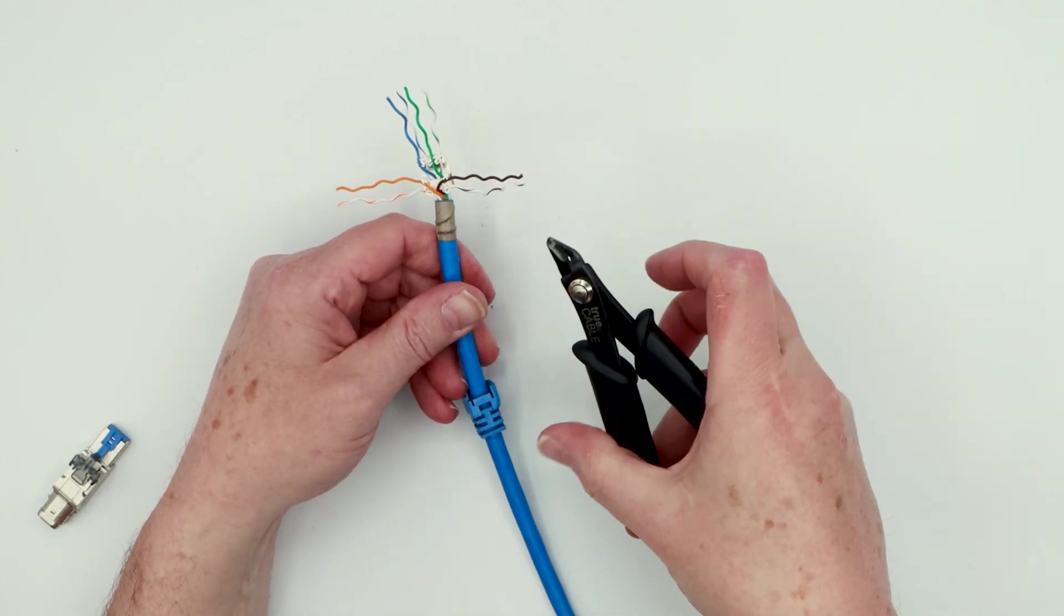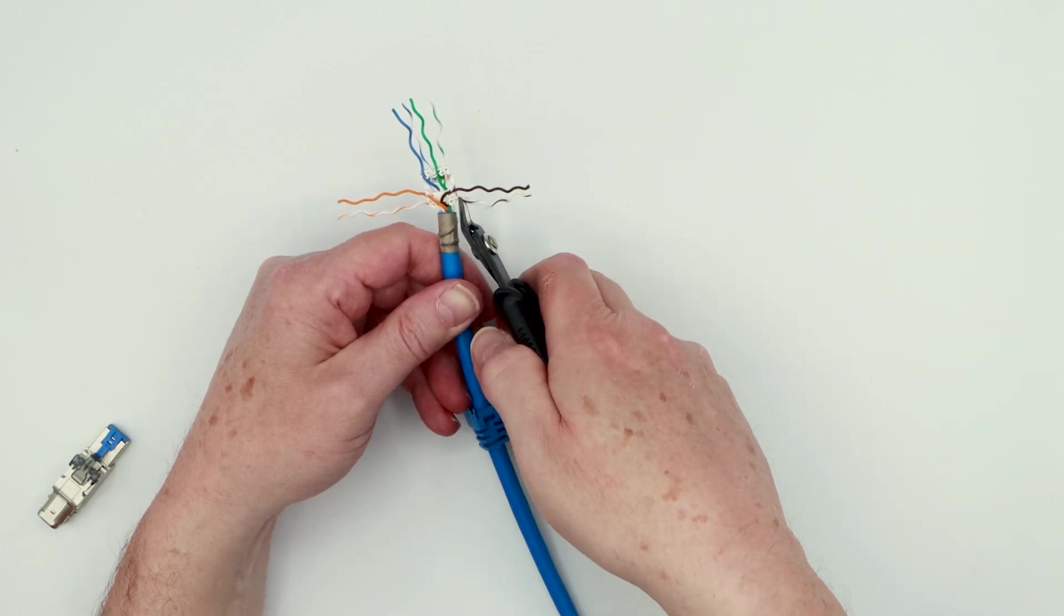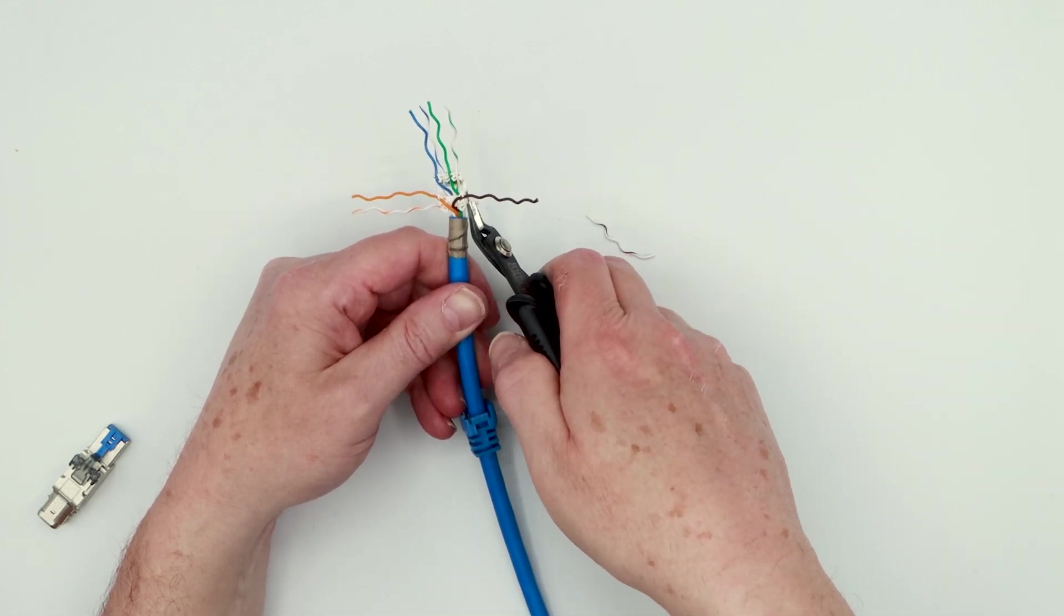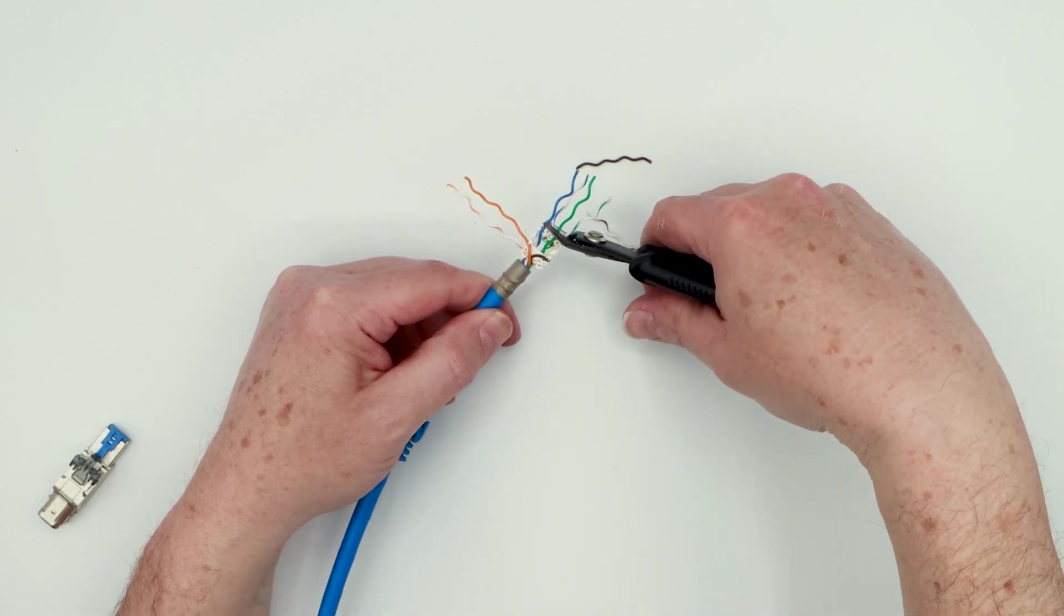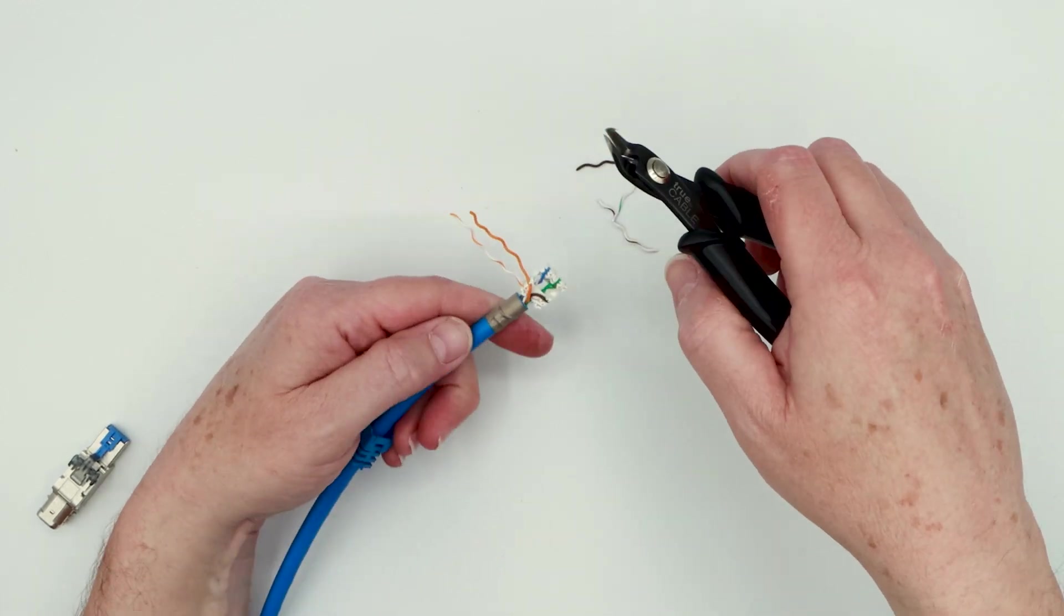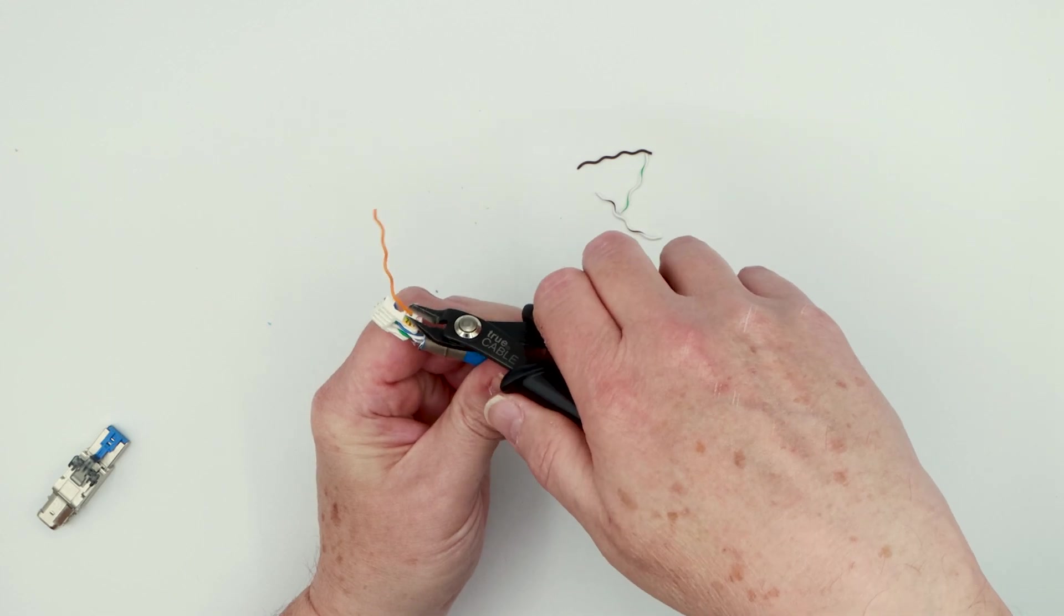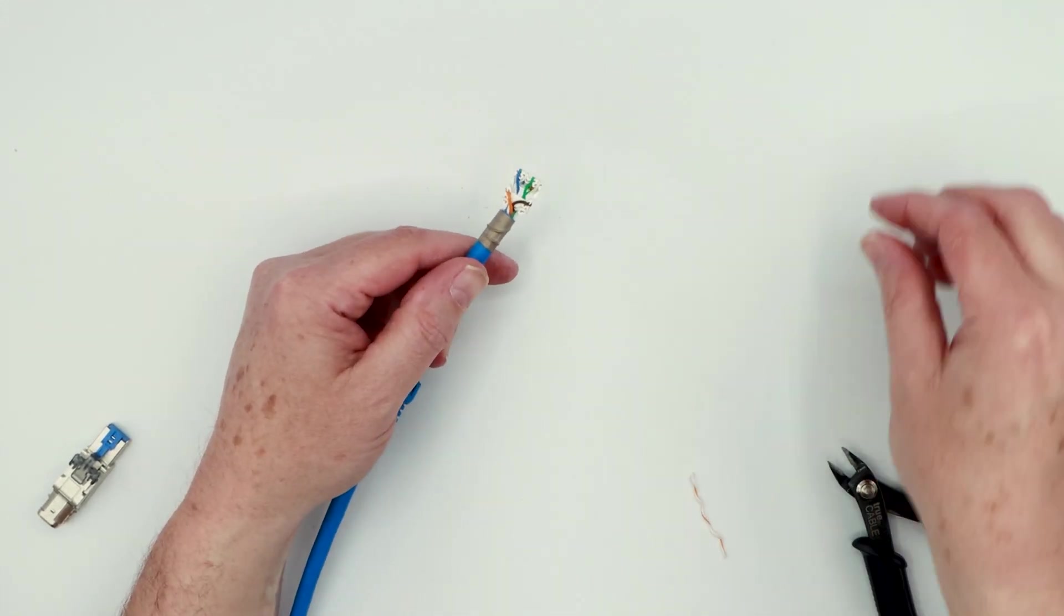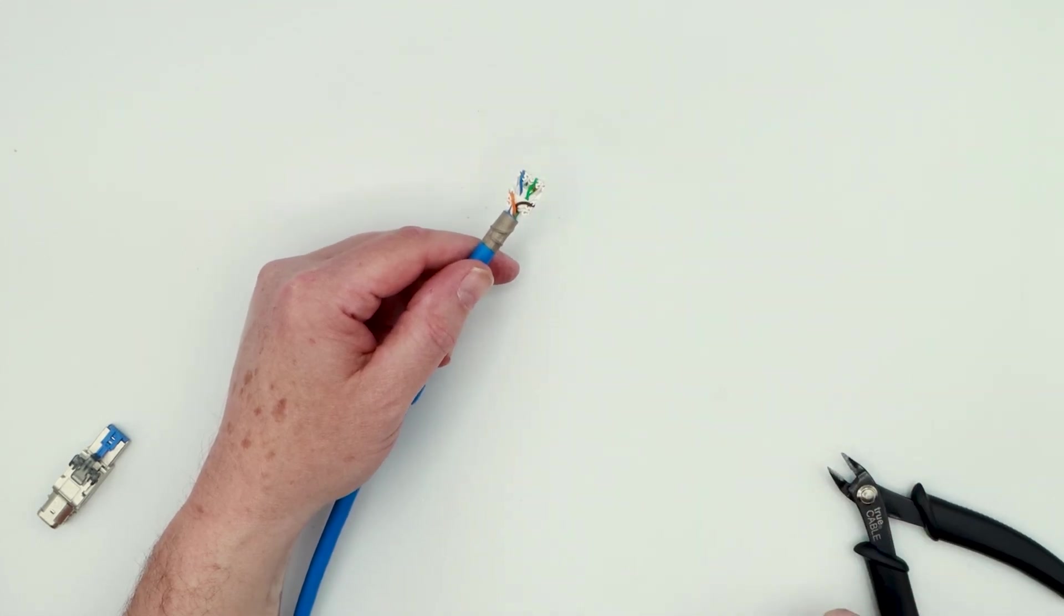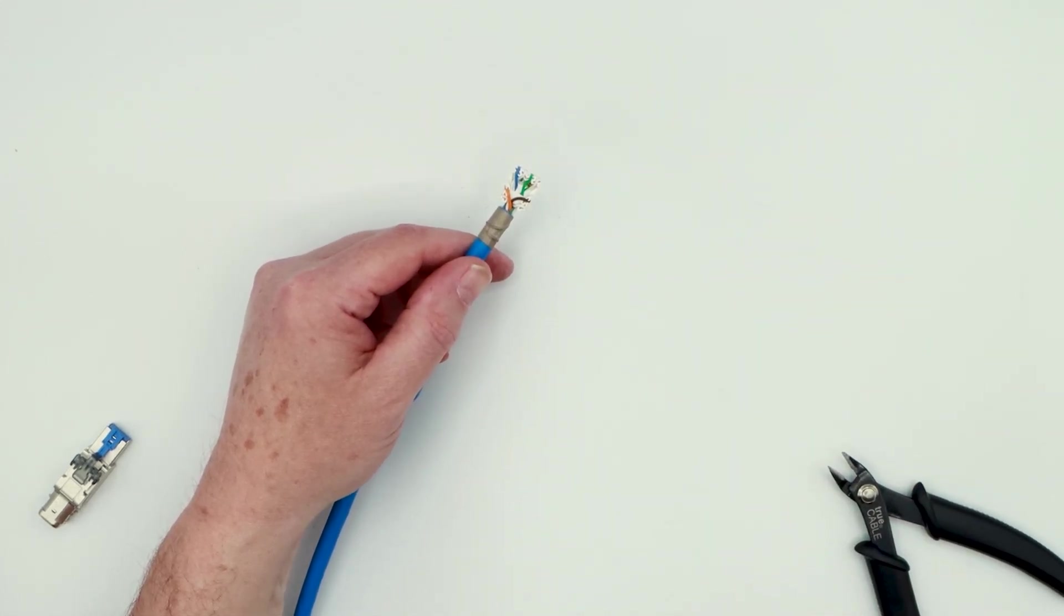The next step is to remove excess conductors. So you're going to flush cut these conductors. You can flush cut all four at the front at once. There we go. So now I've got all four pairs have been flush cut, and they're all seated into the appropriate slots.